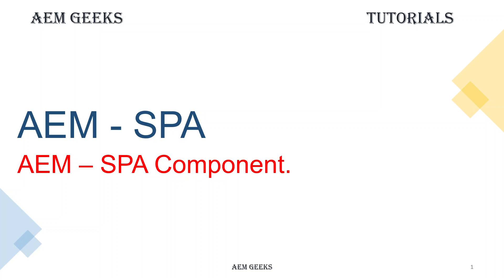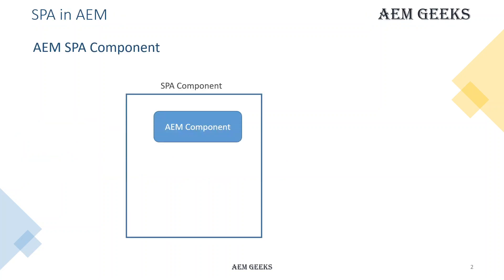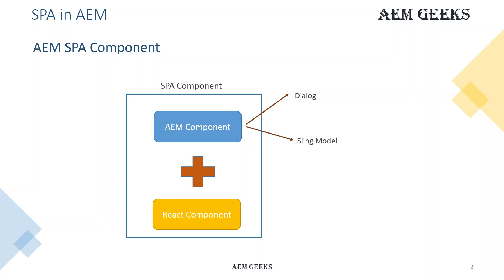In this tutorial, I'll talk about how you can create a custom single page application component. A SPA component has two parts: one is the AEM component and another one is the React component. When you combine these two it makes a complete SPA component. These two sections have different responsibilities. The AEM component is used to create dialogues and sling model. The sling model is used for the content exporter — if you haven't seen that, I have two tutorials related to content exporter you can check.